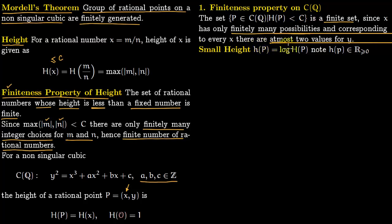Another definition we want to make is about small height — lowercase h — which is just the log of the big height H. Notice that this small height is always a non-negative real number, because H(P) is the maximum of the numerator or denominator, which are positive integers. The log of a positive integer is at least zero, with the minimum value of zero occurring when the integer is one.